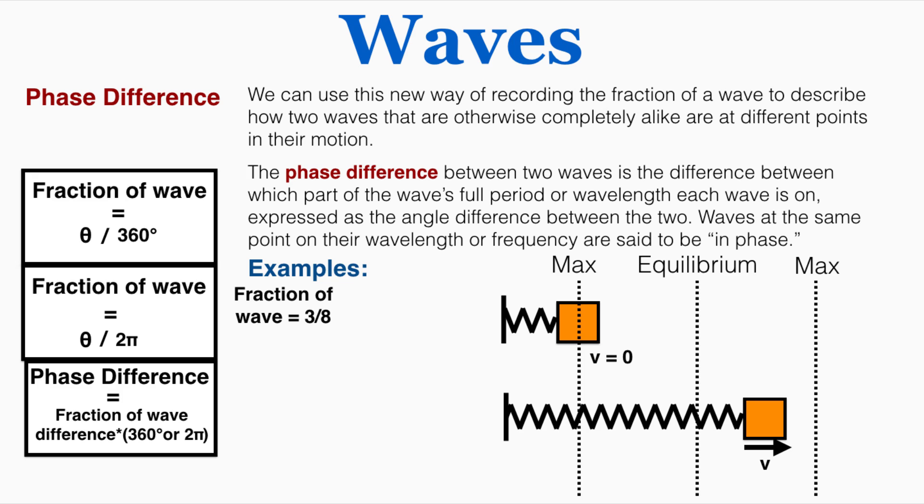So because this is 3 eighths of its full oscillation we would say that the phase difference is 3 eighths times 360 degrees which is equal to a 135 degree phase difference or a 3 pi over 4 phase difference. If it's going backwards that means that it's already achieved that maximum and is moving back in the opposite direction so that means that it has now covered 5 eighths of its total motion so the phase difference there would be 225 degrees or 5 pi over 4.